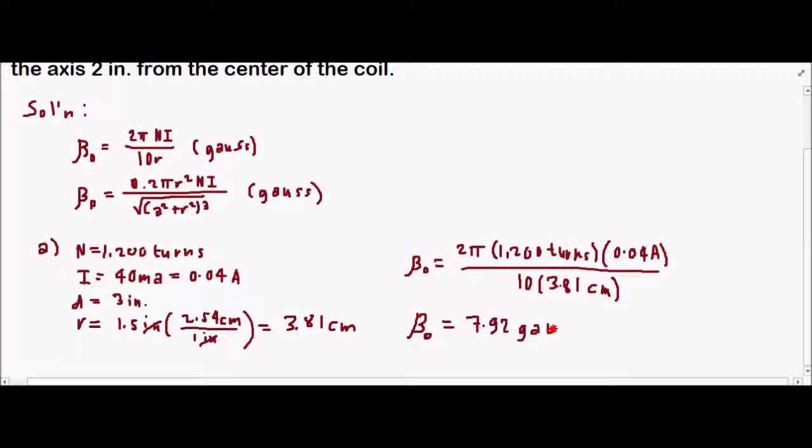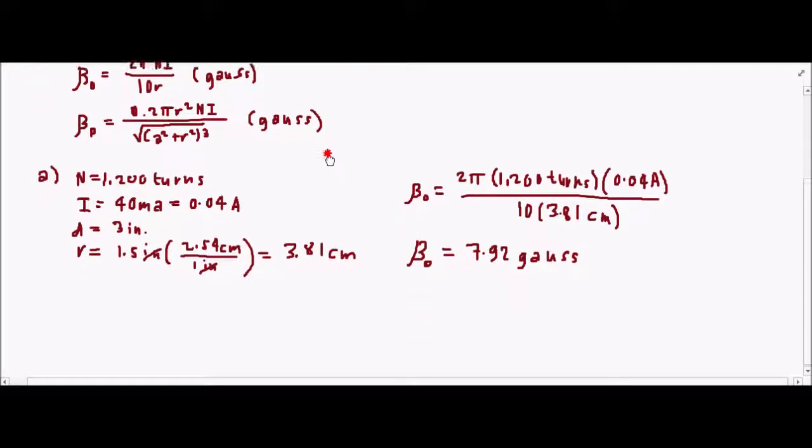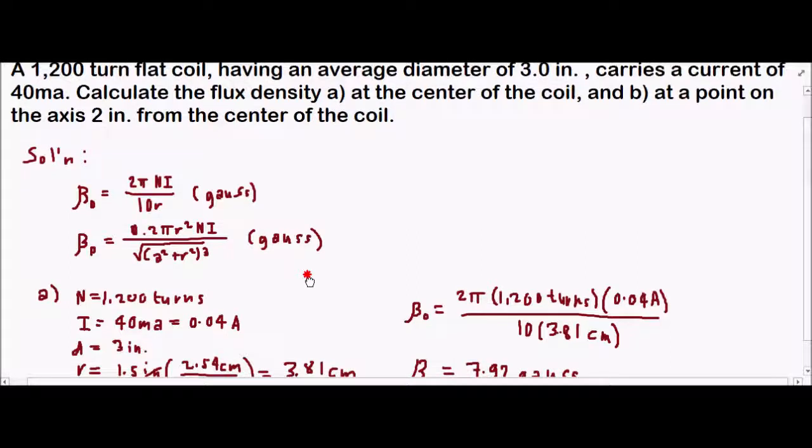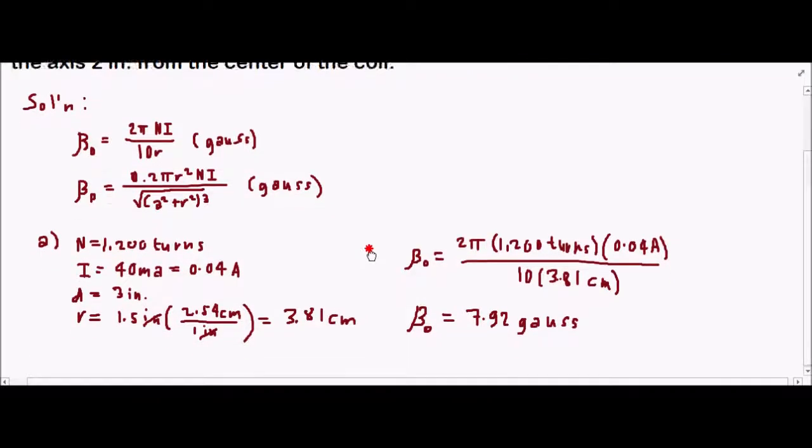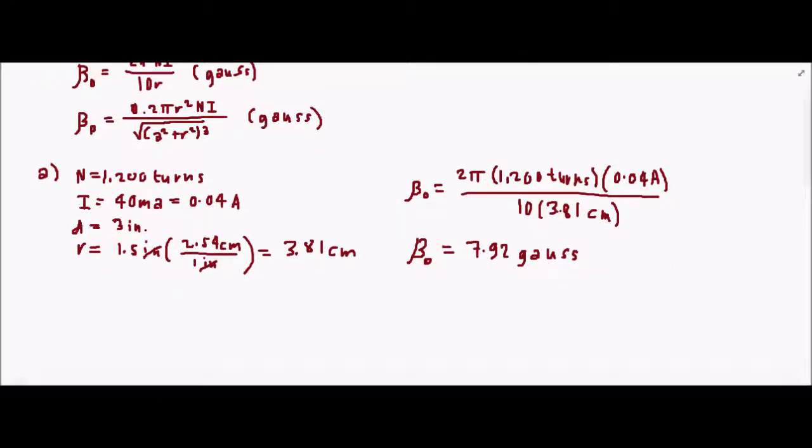Now for letter B, we will use the other formula because we're now considering a point which is two inches from the center of the coil.